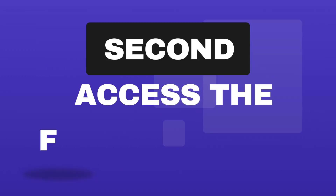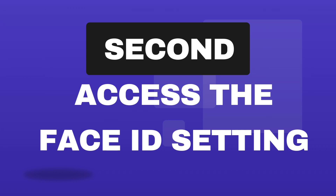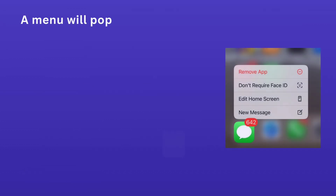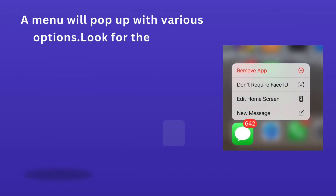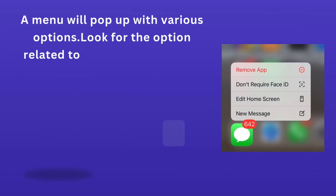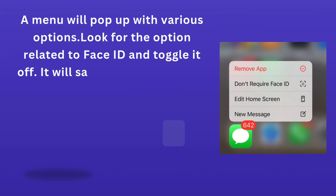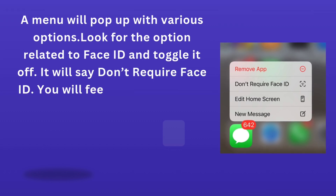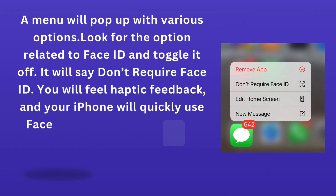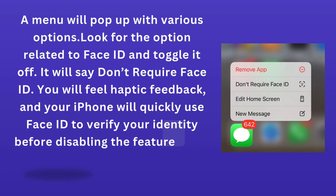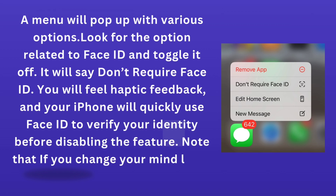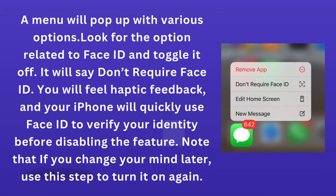Second, access the Face ID setting. A menu will pop up with various options. Look for the option related to Face ID and toggle it off. It will say 'Don't require Face ID.' You will feel haptic feedback, and your iPhone will quickly use Face ID to verify your identity before disabling the feature. Note that if you change your mind later, use this step to turn it on again.